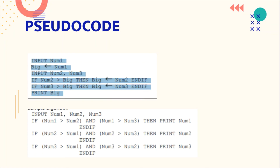At last, print 'big'. That is one approach. The second approach: input Number1, Number2, Number3 all at once. Then: if Number1 > Number2 AND Number1 > Number3 — remember AND means both conditions must be true.